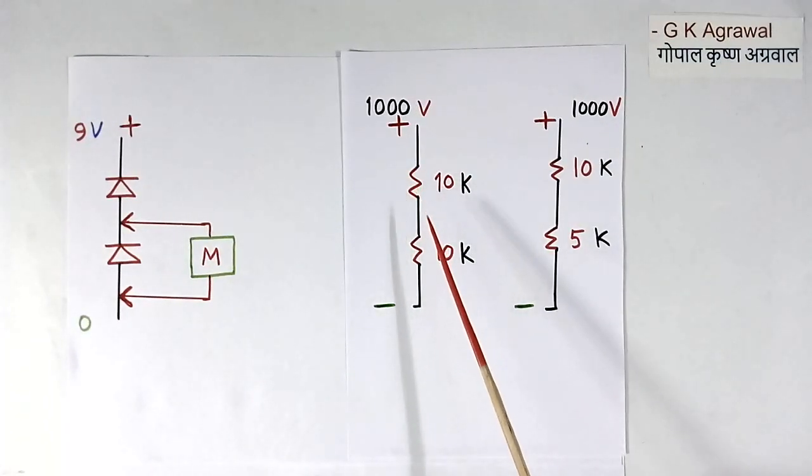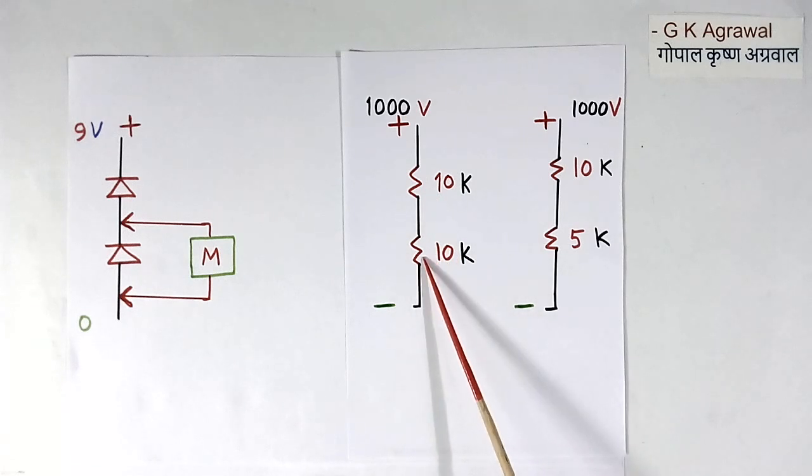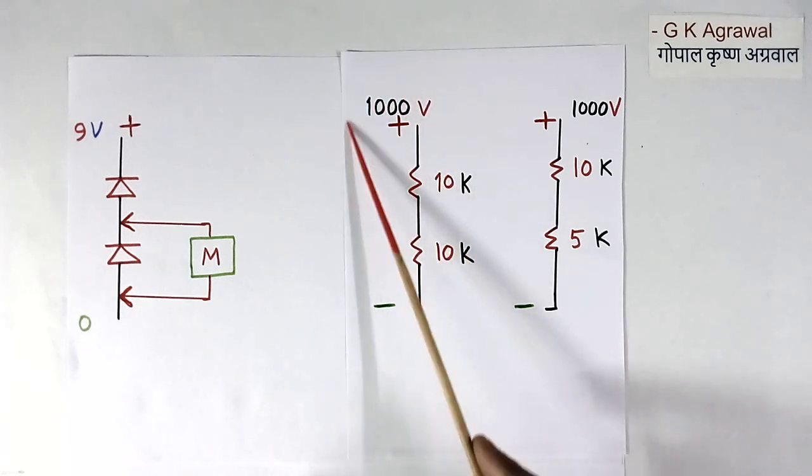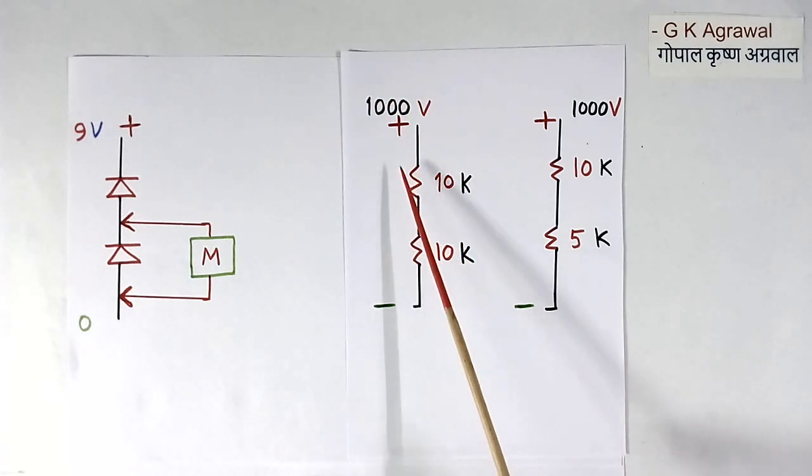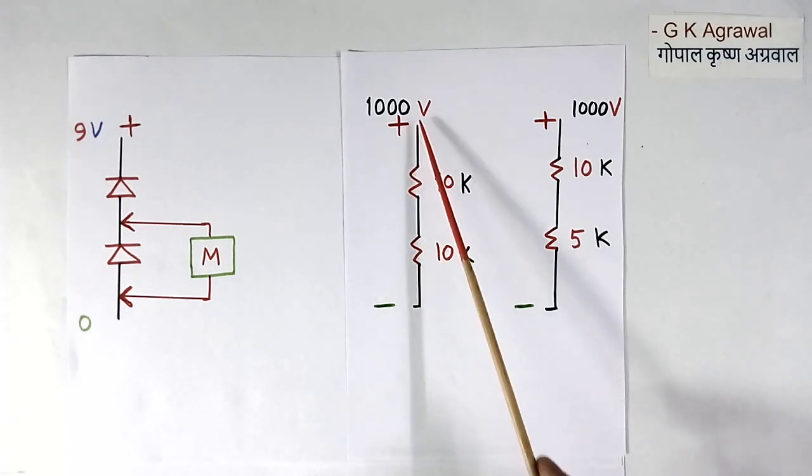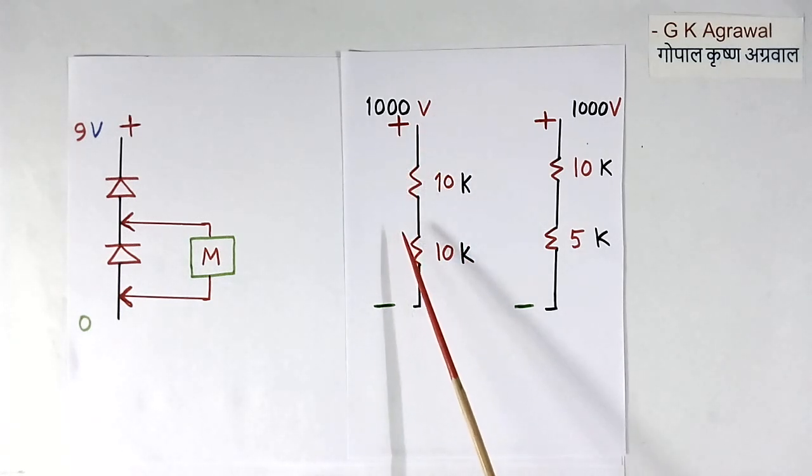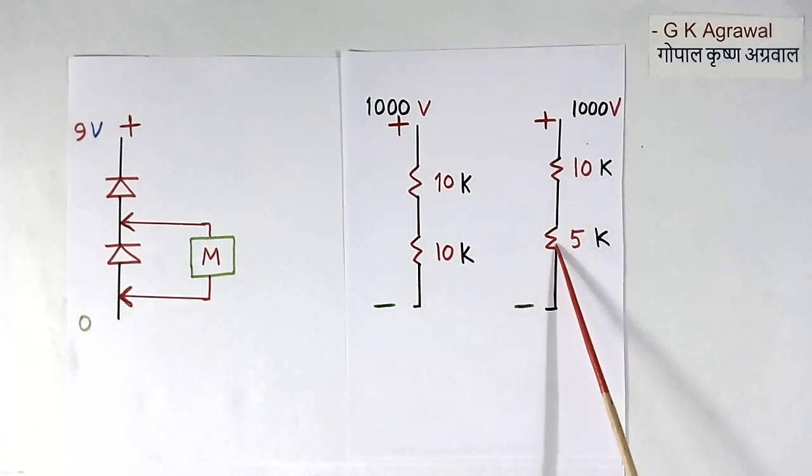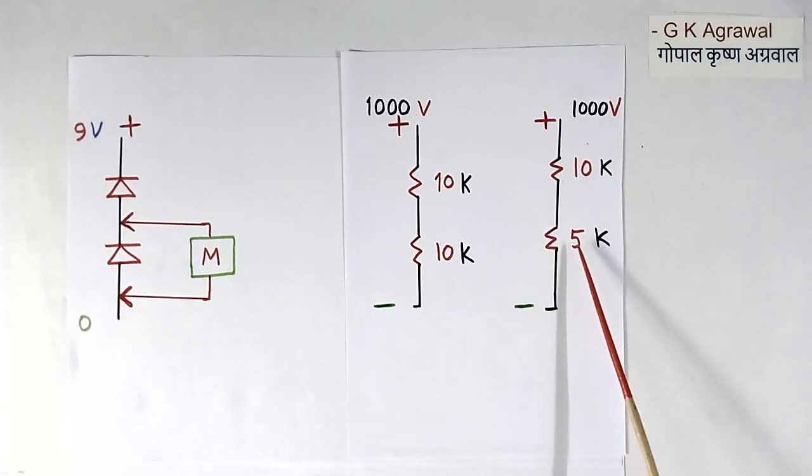Here I have connected 2 resistors in series. Value of both the resistors is equal to 10K. So if we give some voltage here, then this voltage will divide equally here and here. If we give 1000 volt, 500 volt will come here, 500 volt will come here.